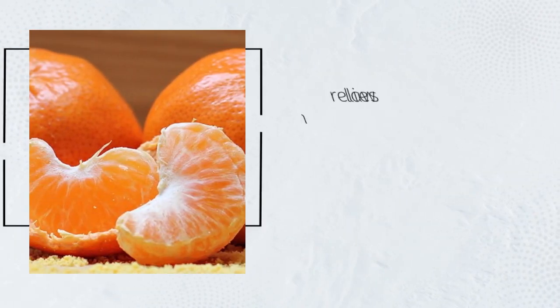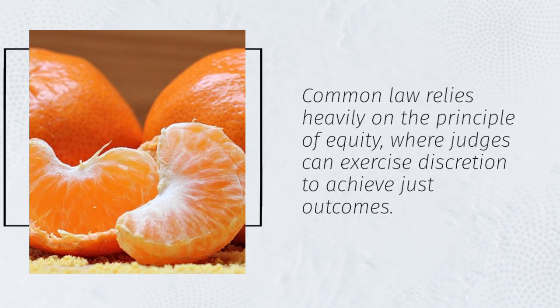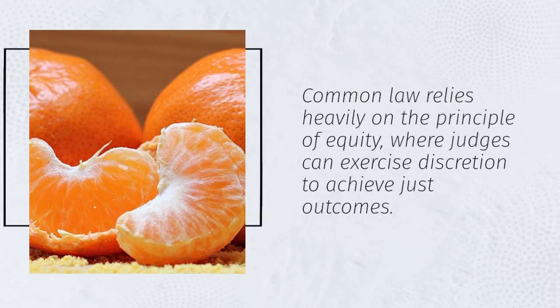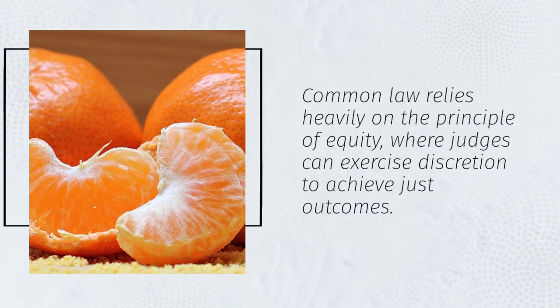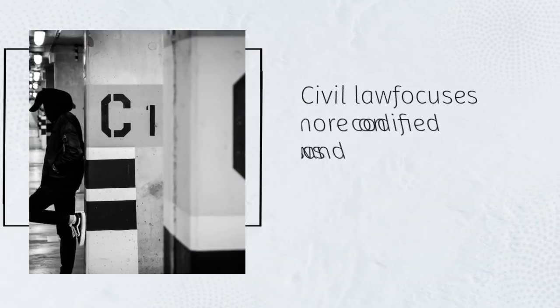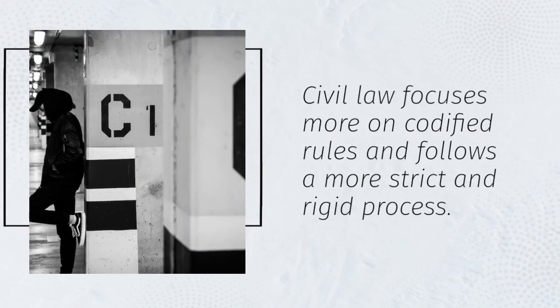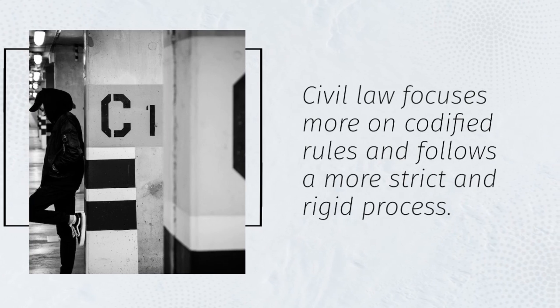Common law relies heavily on the principle of equity, where judges can exercise discretion to achieve just outcomes. Civil law focuses more on codified rules and follows a more strict and rigid process.